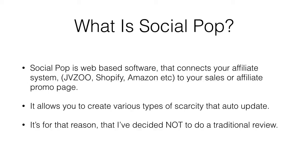Put simply, what it allows you to do is create various types of scarcity that auto-update. So if you said there are only five hours left, you could create a timer that connects to the sales system, and it would change everything after those five hours. But imagine you say there are only 10 bonus packs available — Social Pop will look at the sales system, see the sales coming in, and automatically update your page.